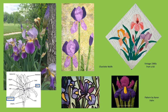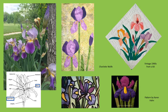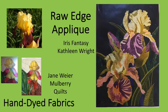Some quilters add the beard or the signal patch to their depictions of the iris, either through appliqué pieces or through embroidery, whether they're making a traditional pattern or designing something original. One of the most exciting things about quilting is that each individual quilter, even if they're using a traditional block, tends to make that block his or her own. Other quilters use raw edge appliqué, where they do not turn the edges under but rather fuse and stitch down the pieces, which allows for more realistic ruffling and other small details.